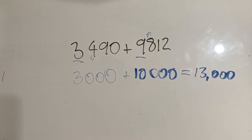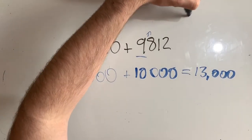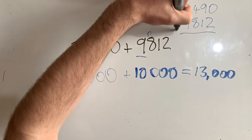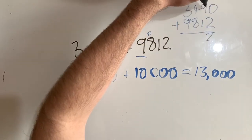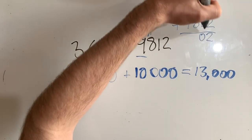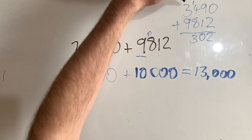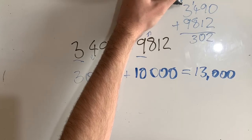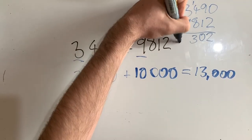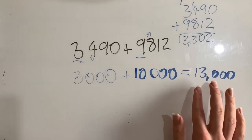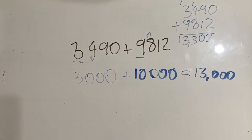Now we can work out the actual answer using standard notation: 3,490 plus 9,812. Zero plus two is two; one plus nine is ten, carry the one, put down zero; four plus eight plus one carried is thirteen, carry the one; and one plus three plus nine is thirteen. The actual answer is 13,302. The difference from our estimate of 13,000 is only 302, but because we're dealing with much larger numbers, that's actually fine. This looks pretty close, so the calculation is a reasonable answer.